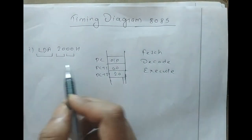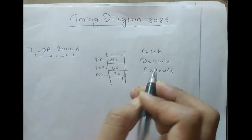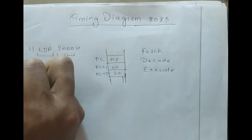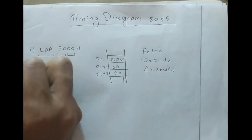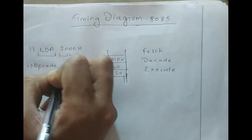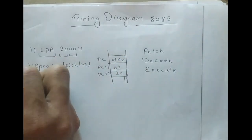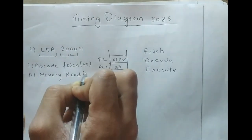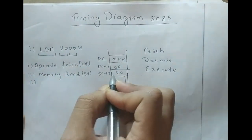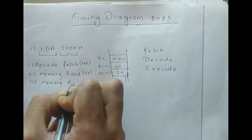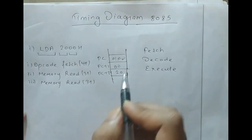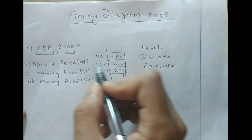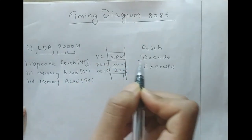First we have to perform fetch, then decode, then execute. To fetch the opcode, 00, and 20, we have to perform memory read. The memory read of the opcode is considered as opcode fetch, which consists of 4T states. Then we read the next byte, which is 3T states, and then we read the 20, which is also 3T states. The decode part executes during the opcode fetch phase because it has the additional T state.